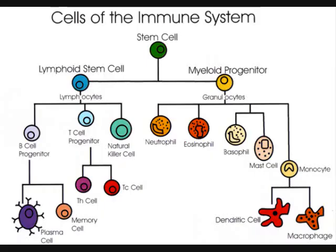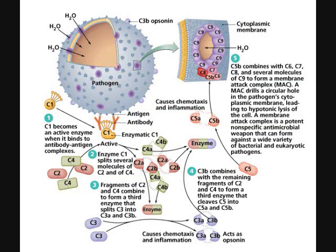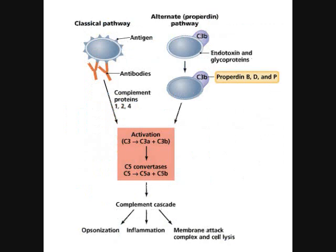Question three: what diseases are represented by the acronym STORCH, and what is its importance? These are diseases that can be transferred from mother to child, either by crossing the placenta or through blood exchange during birth. S is for syphilis, T is for toxoplasmosis, O is for things like hepatitis B and HIV, R is rubella, C is cytomegalovirus, and H is herpesvirus.